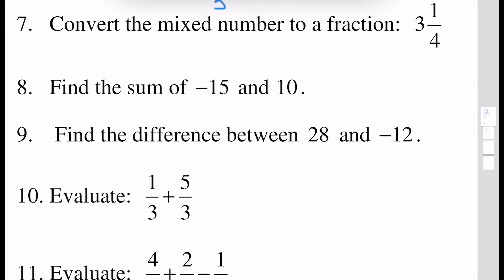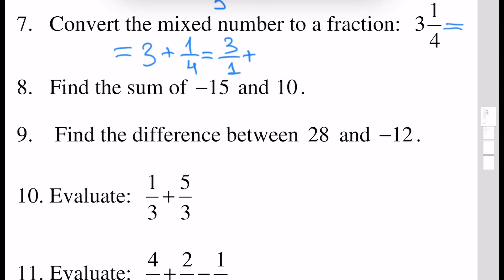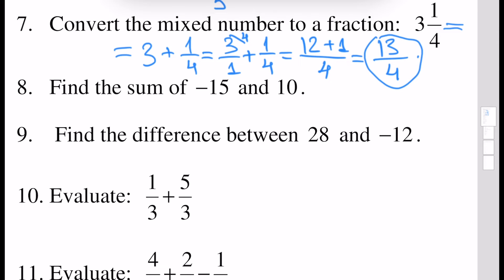Next, convert the mixed number to a fraction. This number is called a mixed number because we have an integer part and a fractional part. By definition this number is equal to 3 plus 1 over 4, and 3 can be written as 3 over 1. We have the problem of addition of two fractions, so we write in the denominator the common multiple of 1 and 4, which is 4. That's why 3 must be multiplied by 4, giving us 3 times 4 which is 12, plus 1, giving us 13. So 13 over 4 is the fraction after we converted our mixed number.